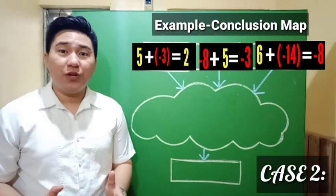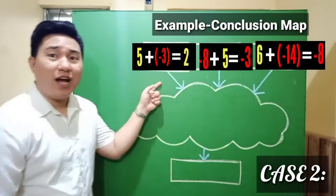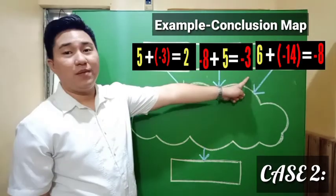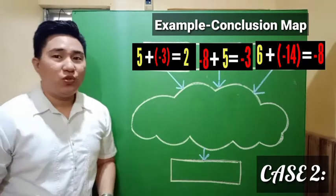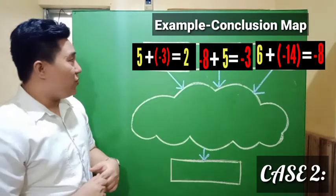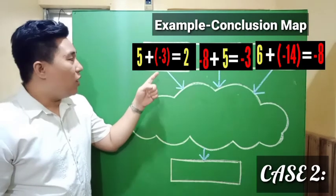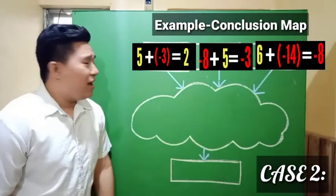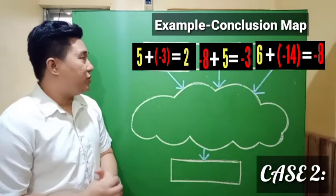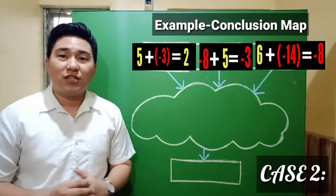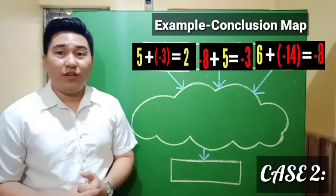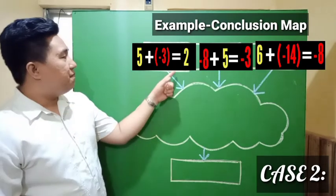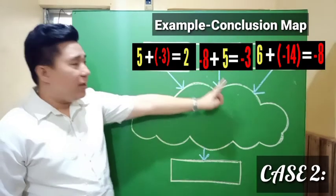Let's observe the pattern for each example. In example one, we have a positive added to a negative; example two, a negative added to a positive; example three, a positive added to a negative. In all cases, we added two numbers with different signs — two different colors combined: one yellow and one red. Unlike case one where we get the sum, in this case we get the difference. How do we get the sign for each result — positive 2, negative 3, and negative 8?